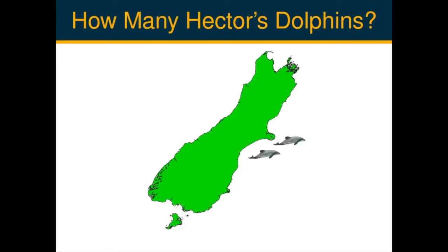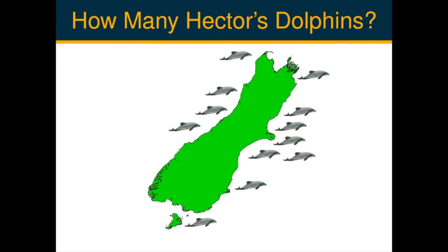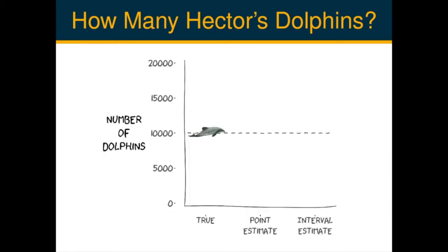So what is a confidence interval? Suppose we are trying to estimate the value of some quality of interest — for example, the number of Hector's dolphins around the South Island of New Zealand. In reality there is some fixed true value that is unknown to us, so we go out and collect appropriate data and use that to obtain an estimate. We could use a point estimator, which provides a single value, but we would have to be extremely lucky to get the exact right number. A second approach is to use an interval estimator — instead of a single value, we specify a range of values we think are reasonable. A confidence interval is a type of interval estimator.